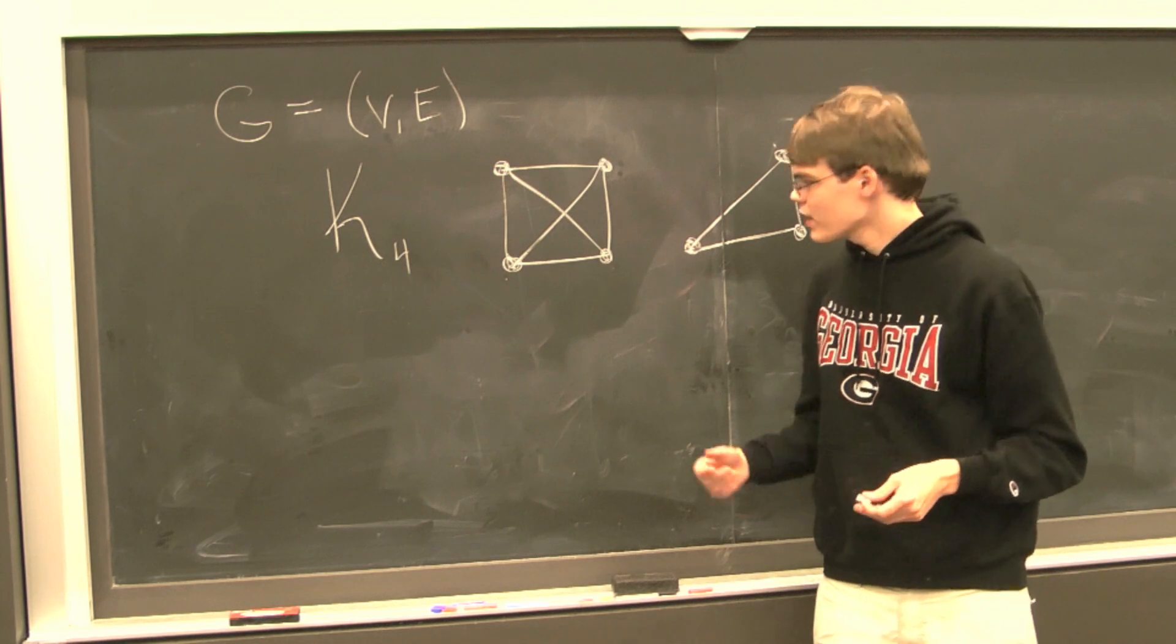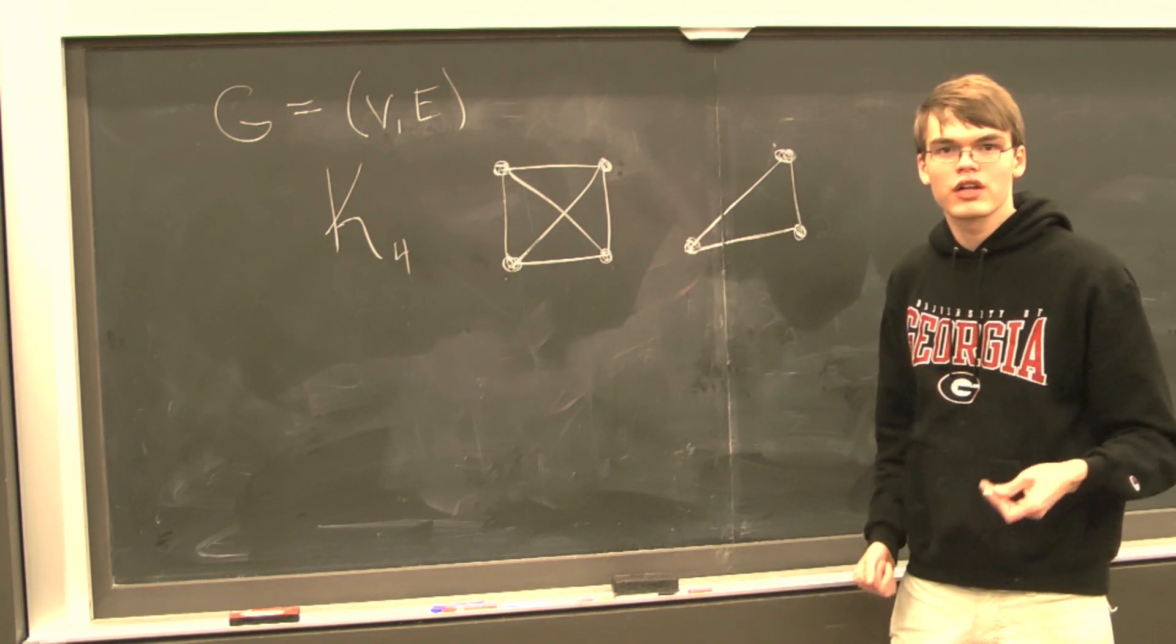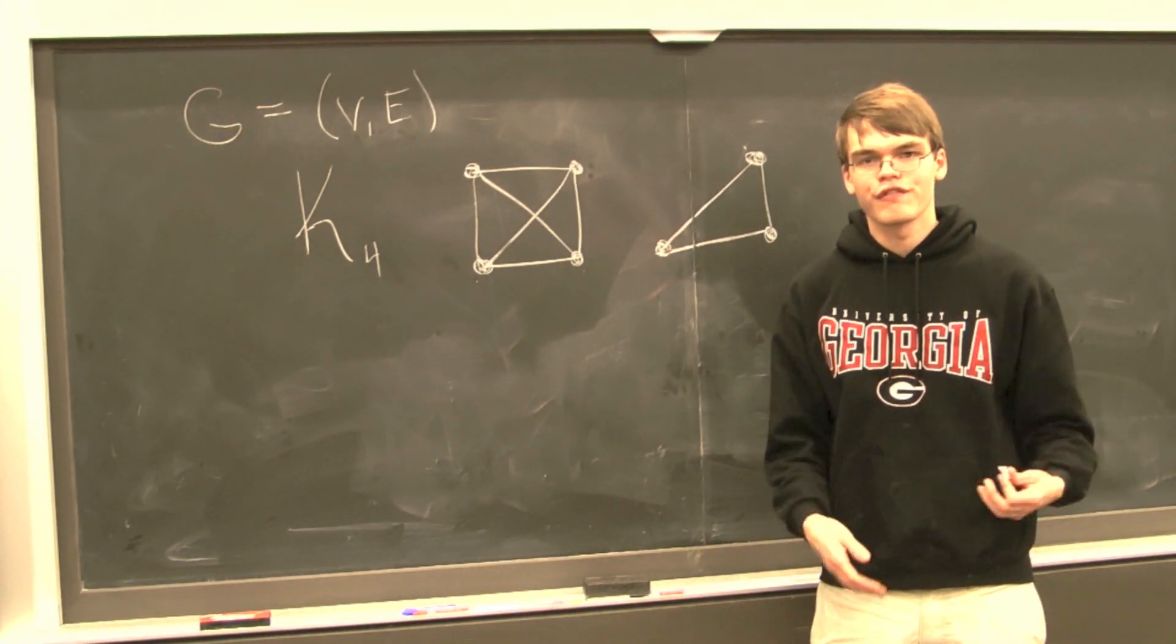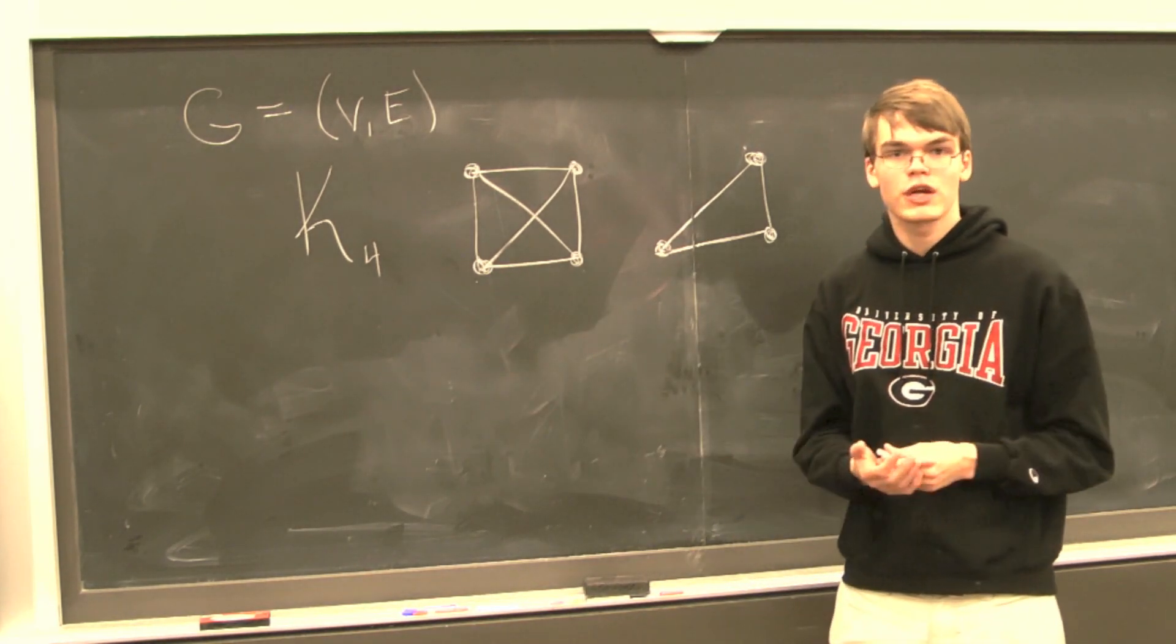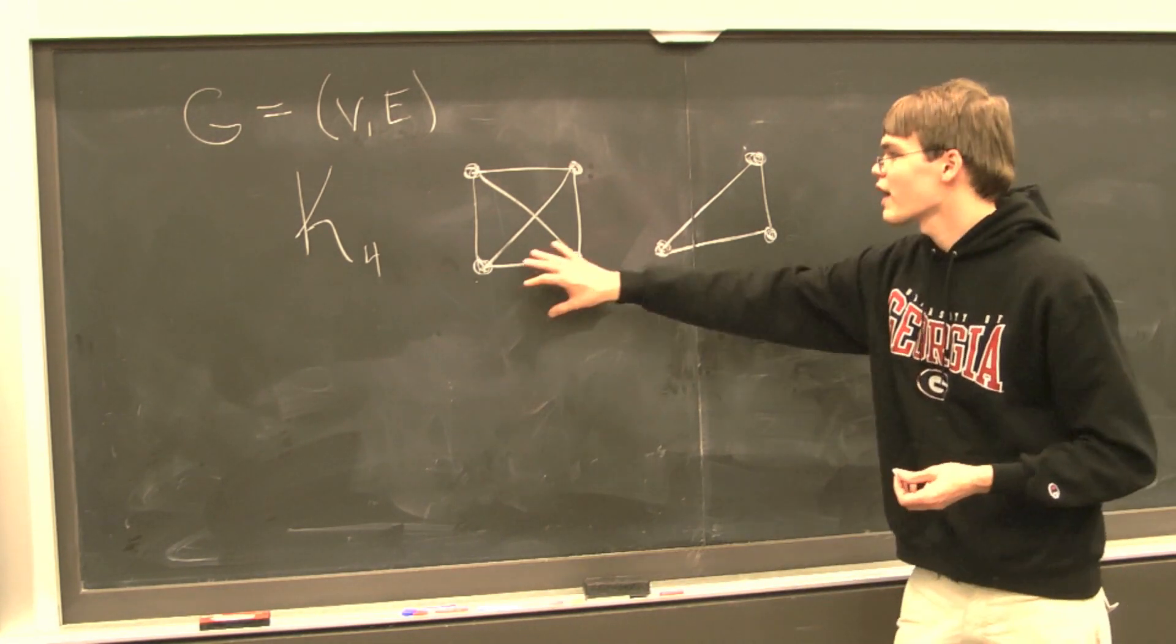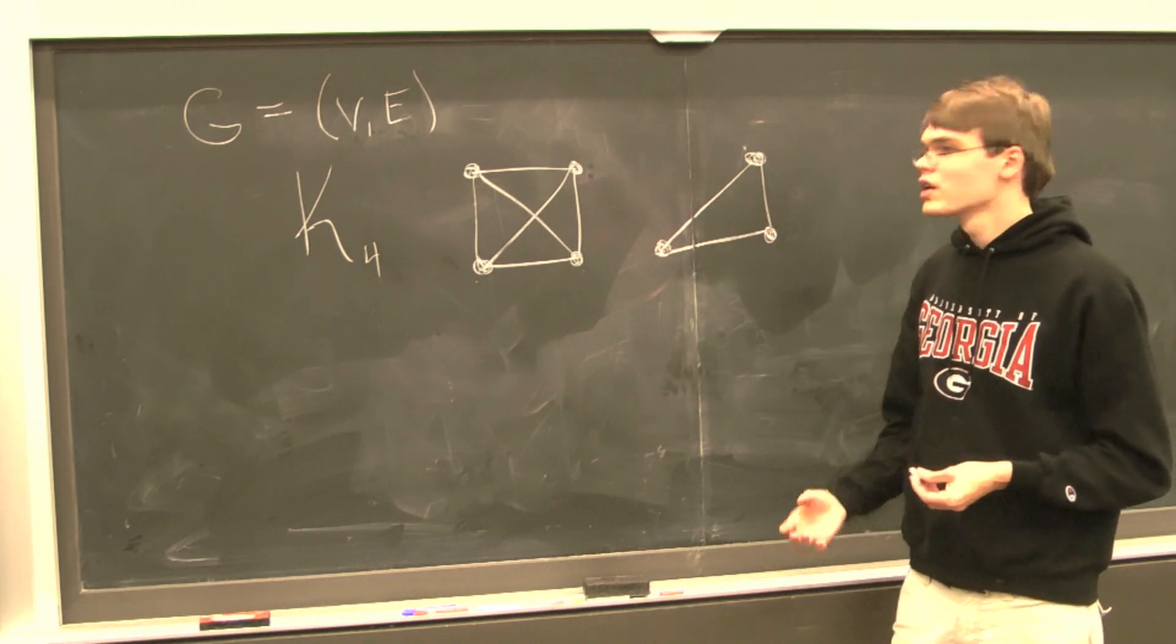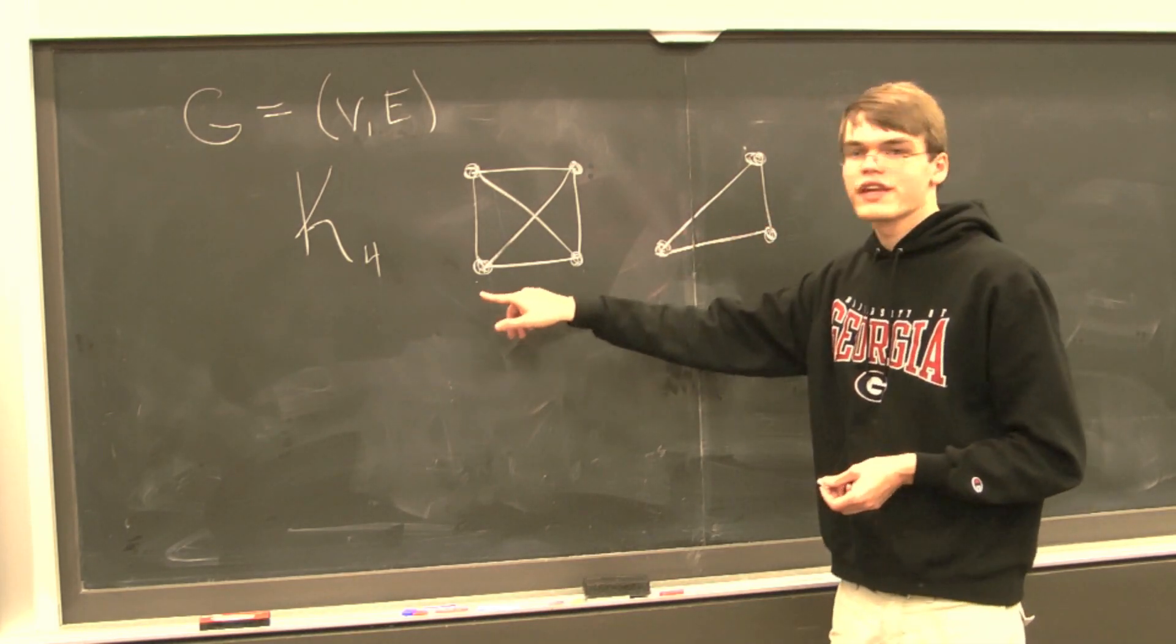Now what we have here is actually a very special type of subgraph, and that's called a clique. A clique is a complete subgraph. Again, this is a very intuitive concept. We've already defined a complete graph and we have the notion of a subgraph. So a clique, or a complete subgraph, is a subgraph of an original graph such that there's edges between every possible pair of vertices. And so this is indeed a clique of K4.